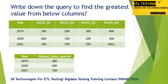You can see quarter one sales is 100, quarter two sales is 200, quarter three is 300, and quarter four is 400. For 2020 you see 600, 200, and 300. For 2021 you see 100, 700, and 200, and the quarter four sales here has a null value.